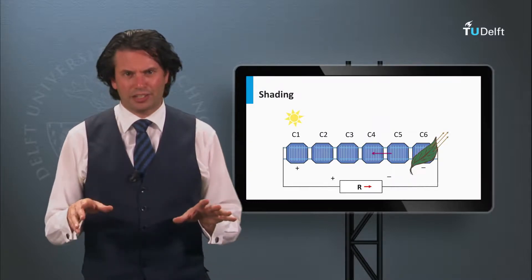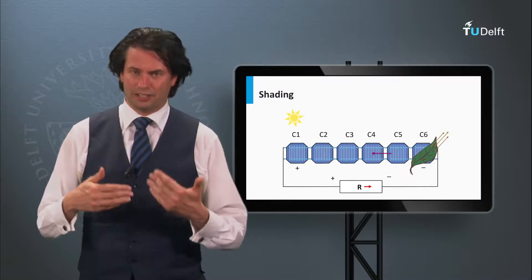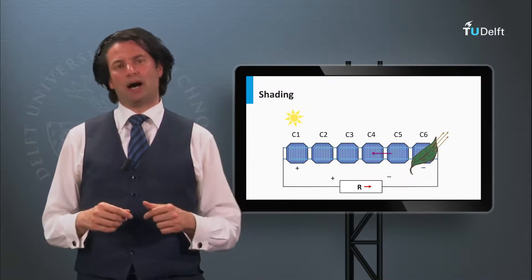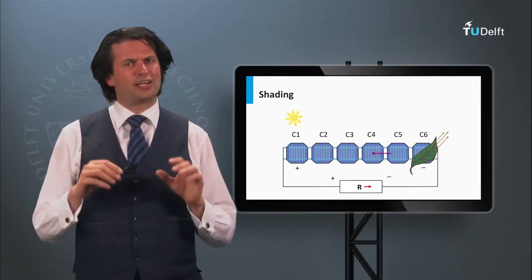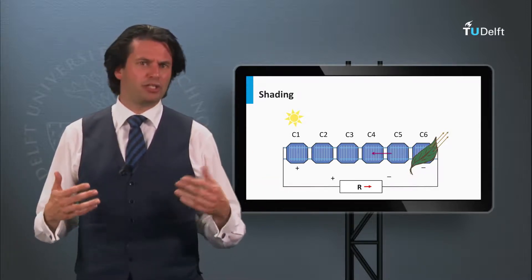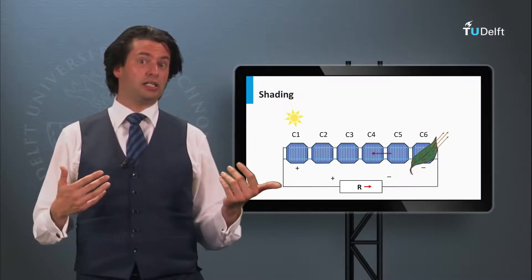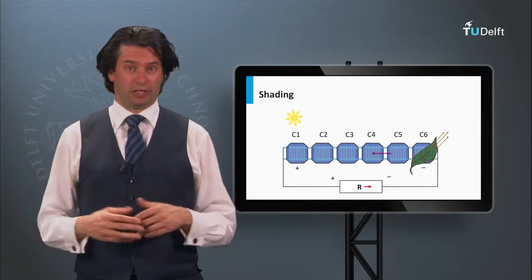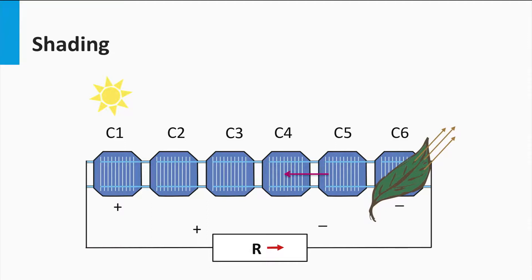Another aspect of modules is that some bypass diodes are integrated into the modules. Why do we need bypass diodes? In real life, the solar module can be partly shaded. This can be the shade of an object nearby, like a tree, a chimney, or a neighboring building. The shading can even be caused by a simple leaf that has fallen from the tree. This can have significant consequences for the output of the solar module.